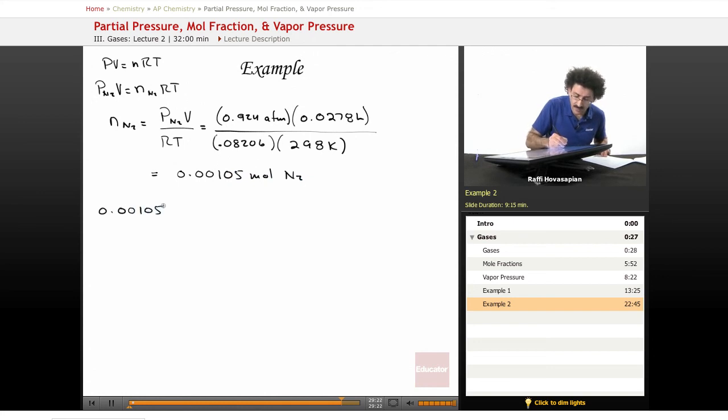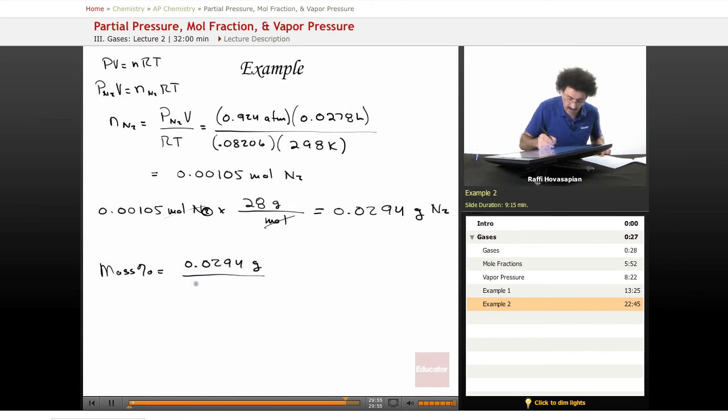We end up with a number of moles equal to 0.00105 moles of nitrogen gas. 0.00105 moles of nitrogen gas times 28 grams per mole. It's 28 because this is N2. Nitrogen is 14, N2 is 28. We end up with 0.0294 grams of N2. Mass percent equals 0.0294 grams divided by the total number of grams, which was 0.225 in our compound, when we multiply by 100%, 13% nitrogen by mass.